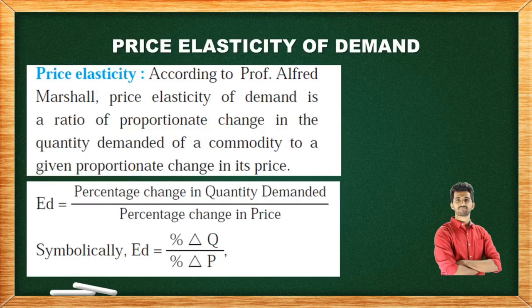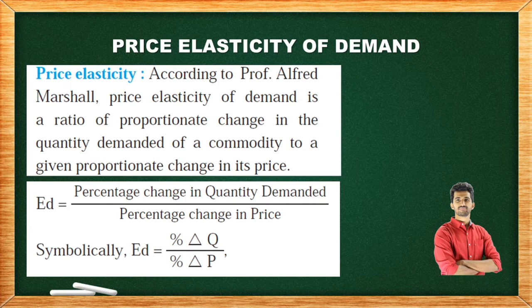In the previous video lecture, we studied about Elasticity. Elasticity means responsiveness of one variable to a change in another variable. Elasticity of Demand refers to the degree of responsiveness of quantity demanded to a change in its price or any other factor. We also saw three types of Elasticity of Demand: Price Elasticity, Income Elasticity, and Cross Elasticity.